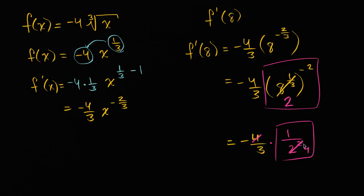And so this is going to simplify to -1 over 3, is equal to -1/3. And we are done.